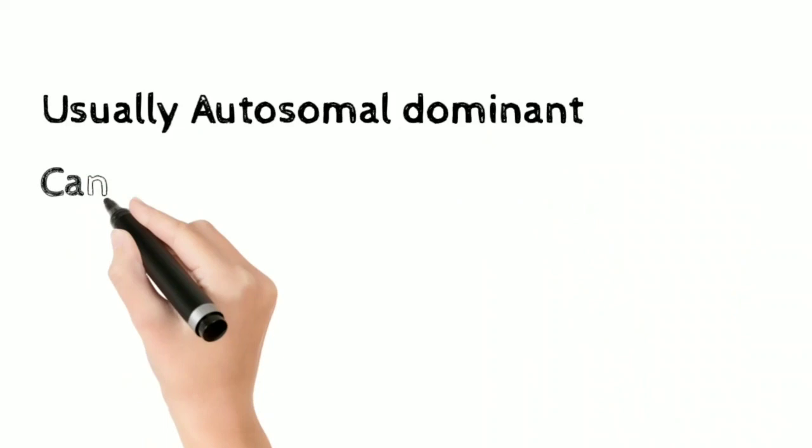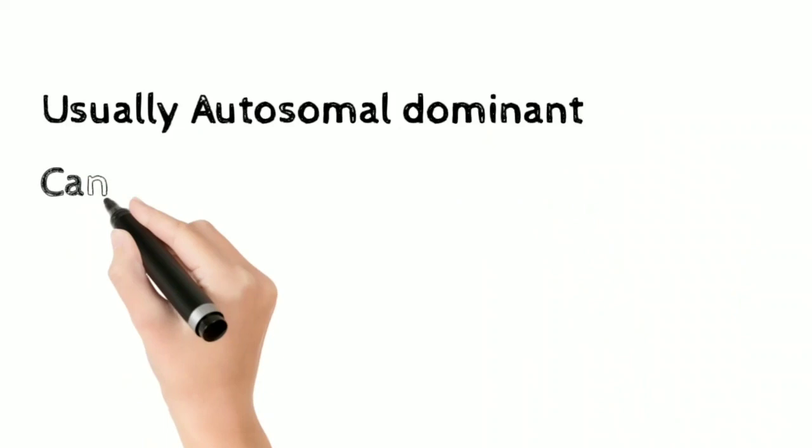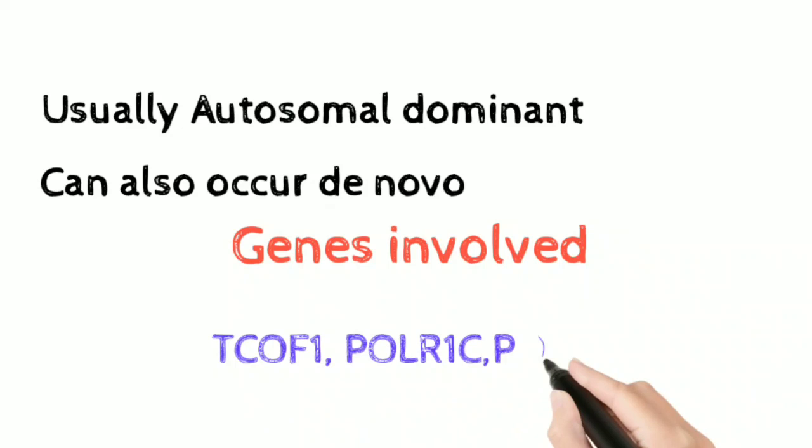Usually it is autosomal dominant but it can also occur de novo. The genes involved are TCOF1, POLR1C, and POLR1D. Among these, TCOF1 is the most common.